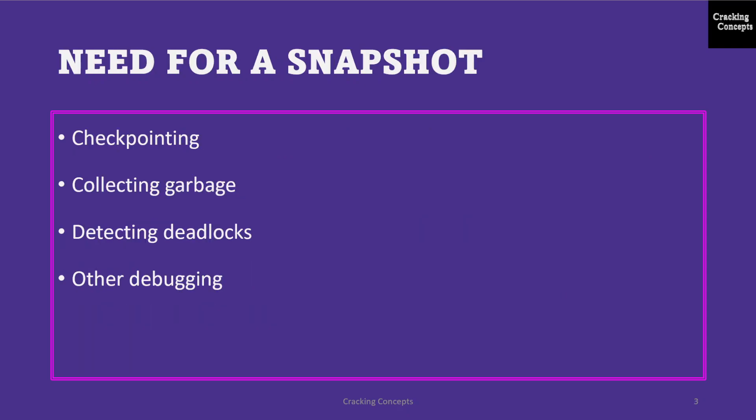Now let us see why we need snapshots. Snapshots can be used for checkpointing, i.e. we can restart if the application fails. They can also be used for collecting garbage, i.e. to remove objects that do not have any reference. They can also be used for detecting deadlocks, so that we can examine the current application state, and also for debugging.